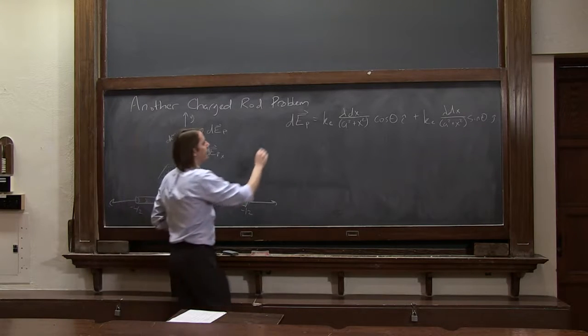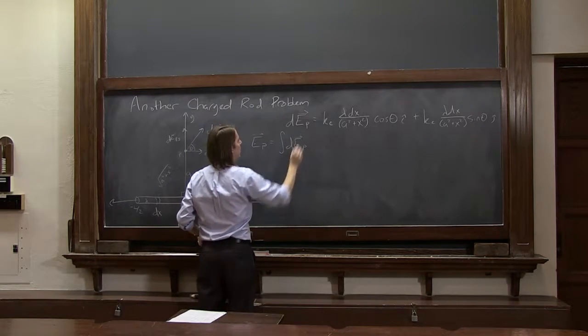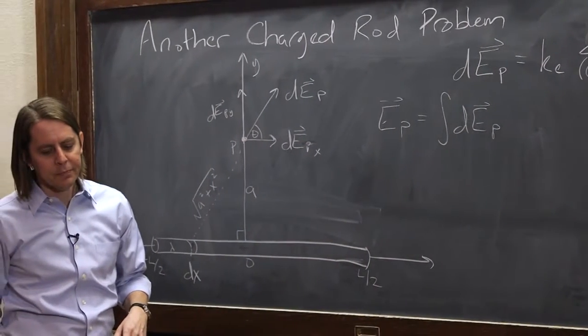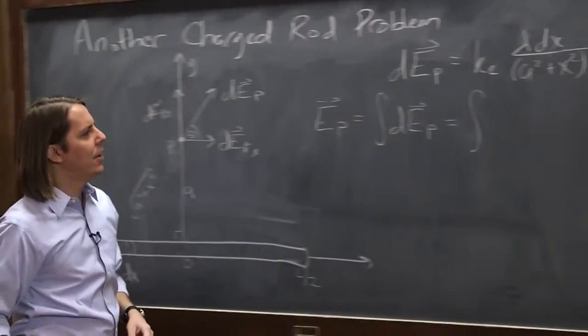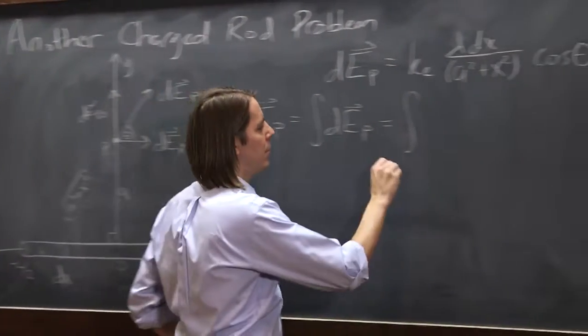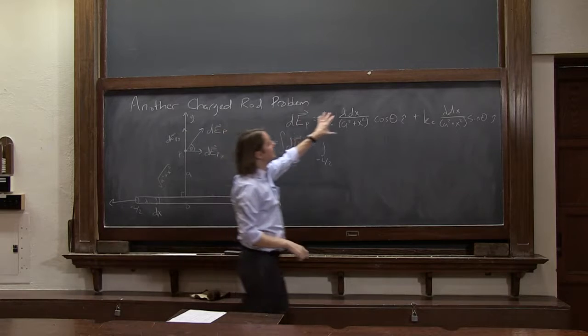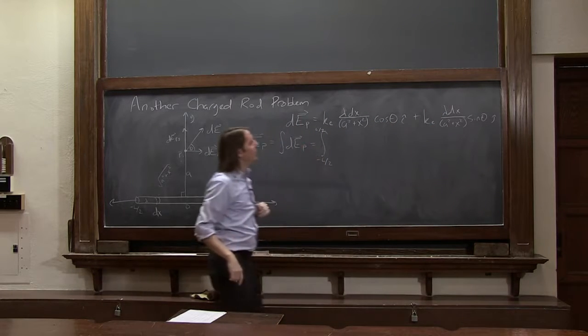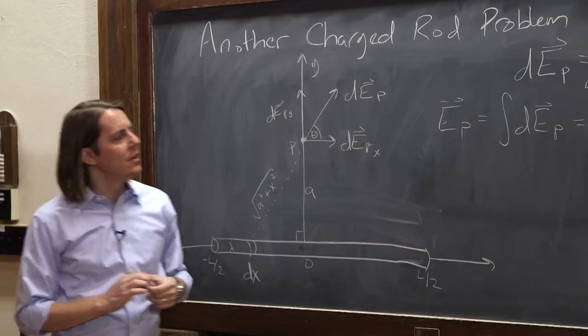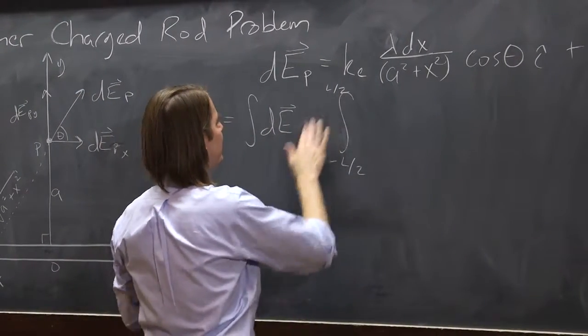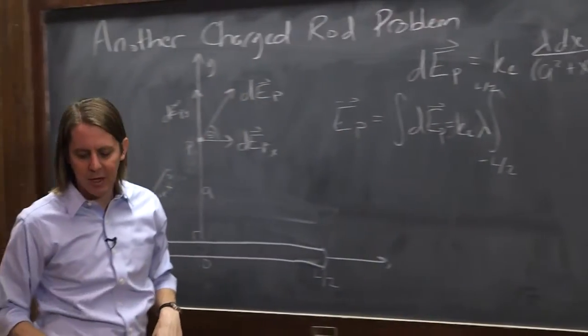Now, we want EP. We want the electric field at point P. So we know we have to integrate. We have to sum up all of our dEPs to get the full field. Let's see then. That means we have to integrate this whole thing. And the limits are going to be minus L over 2 to L over 2. And now we want to write this again, but we want to think about everything in the integral that depends on x. We have to rewrite in terms of x. So let's see. Ke and lambda don't depend on x, so I'm actually going to make myself a little room and just put those in the front. Those are in each one. We can pull those out just to make it not so messy.